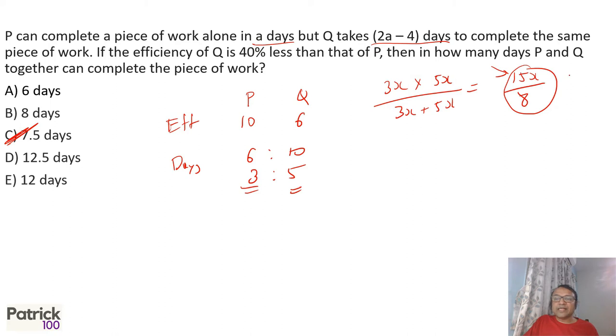To get 7.5, x has to be 4. If x has to be 4, the days will be 12 and 20. So if A is 12, 2A minus 4 will be 2 into 12 minus 4, which is 20. Satisfies. That will be the answer.